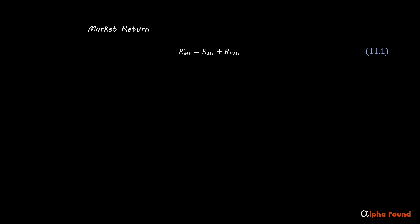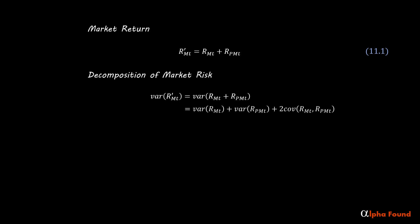Next is the decomposition of market risk. Take the variance of both sides. I am assuming that the covariance between the market and the perturbations is zero. Ultimately, this is only an okay assumption, but it is good enough for our purposes. Finally, we switch to a better-looking notation.